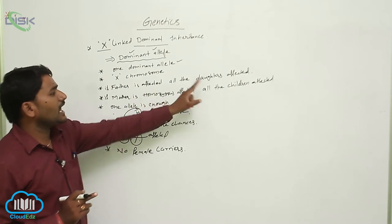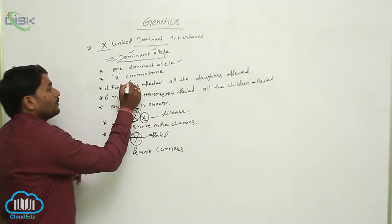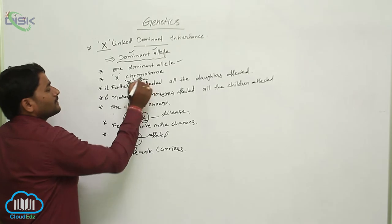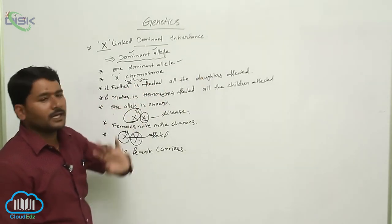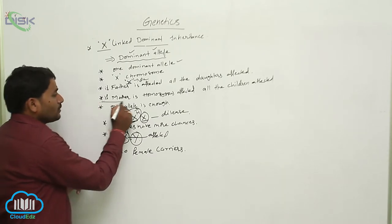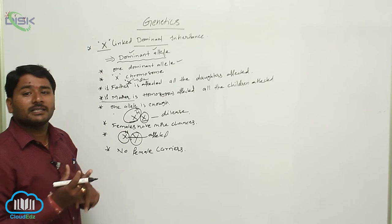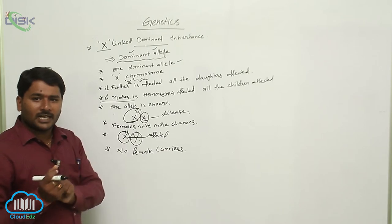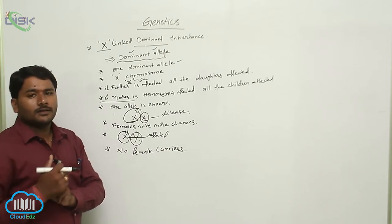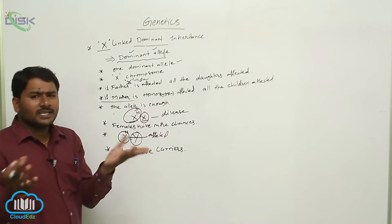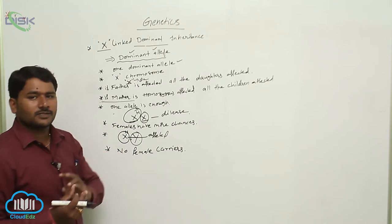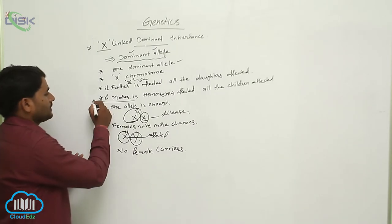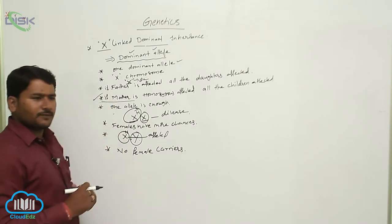If father is affected, all daughters are affected because the father's only X chromosome carries the dominant allele and is passed to all daughters. If mother is homozygous affected — meaning both X chromosomes carry dominant alleles — one will go to the daughter and one to the son, and since one allele is enough to cause the disease, all children will be affected.